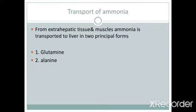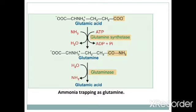Ammonia is a toxic compound that must be eliminated or detoxified immediately when formed, as even minute quantities can produce toxicity in the central nervous system. Since ammonia is produced by almost all cells including neurons, intracellular ammonia is immediately trapped by glutamic acid to form glutamine, especially in brain cells. This glutamine is transported to the liver, where it is cleaved by glutaminase, releasing ammonia that is then immediately detoxified into urea.